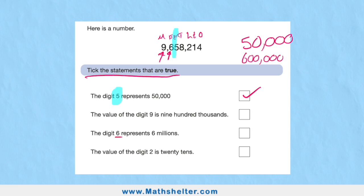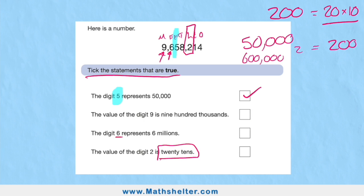The value of the two is twenty tens. Now this is a horrible little one because look, my value two is in the hundreds, so it represents two hundred. Well, two hundred is twenty tens—twenty times ten. So twenty lots of ten is two hundred, and the two is in the hundreds column, so it's in the right one.